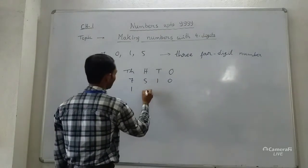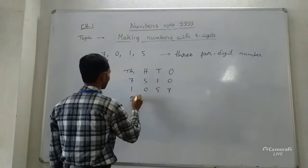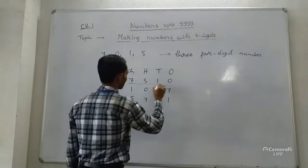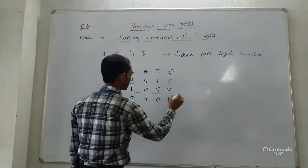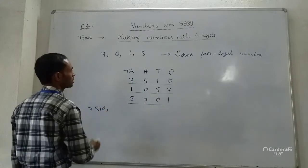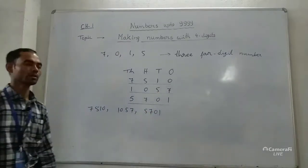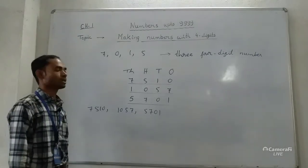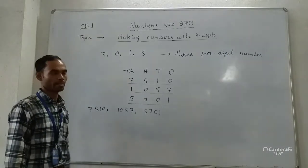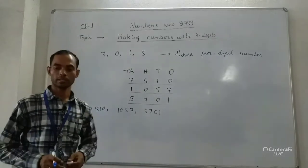Next, suppose I take 1, then 0, then 5, then 7. This is the second number: 1057. For the third number, let us take 5 at the 1000s place, then 7, then 0, then 1. The three numbers are: 7510, 1057, and 5701. If 0 is present among the digits, you should not place 0 at the leftmost position — that is, at the 1000s place.